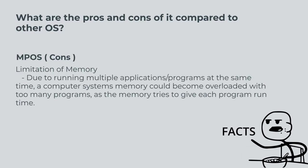Multiprocessing OS cons: limitation of memory. Due to running multiple applications and programs at the same time, a computer system's memory could become overloaded with too many programs, as the memory tries to give each program runtime.